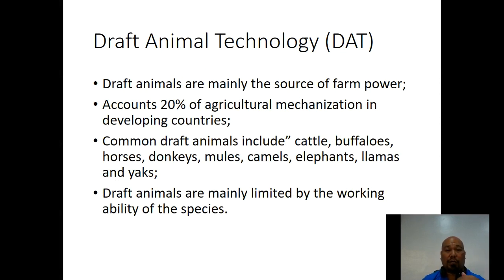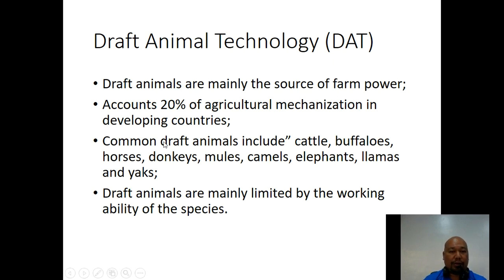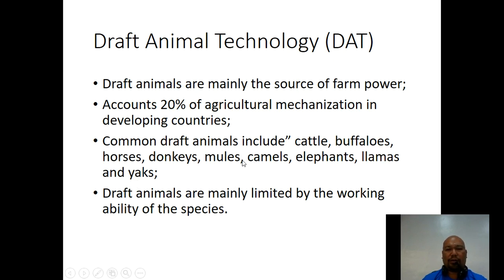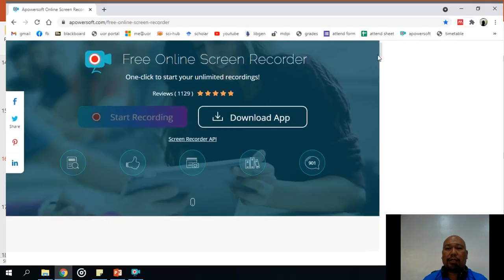When we say draft animal technology, it means the main source of power is actually an animal. It's not limited to carabaos that we are already very familiar with. In fact, in other countries, they're using cattle, buffaloes, carabao — which is basically a water buffalo — horses, donkeys, llamas, camels, and yaks.